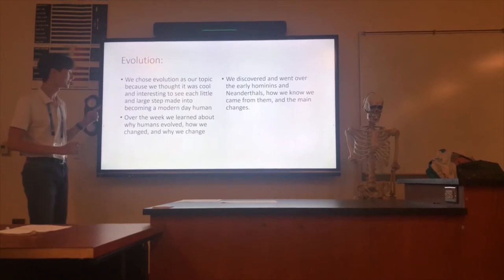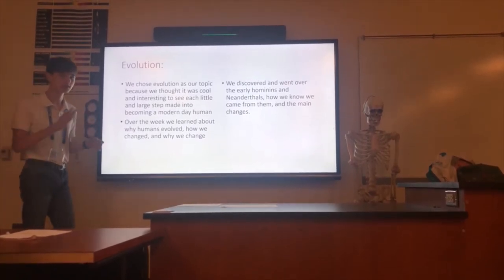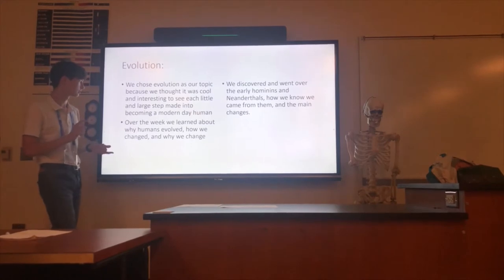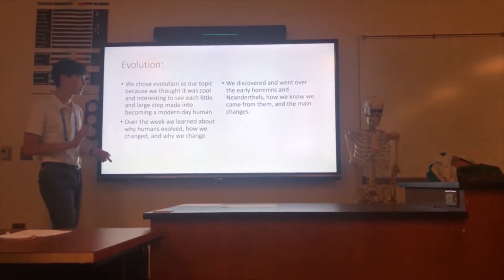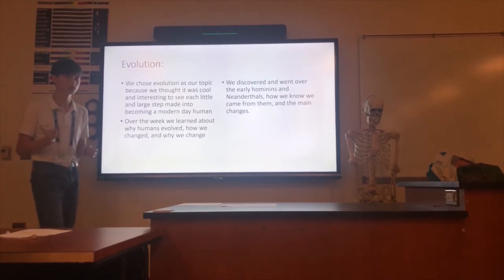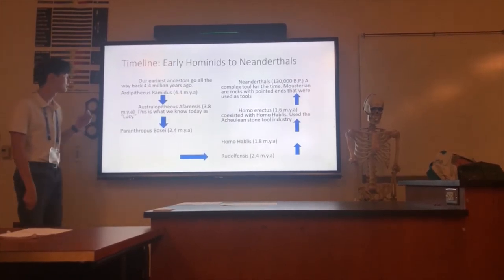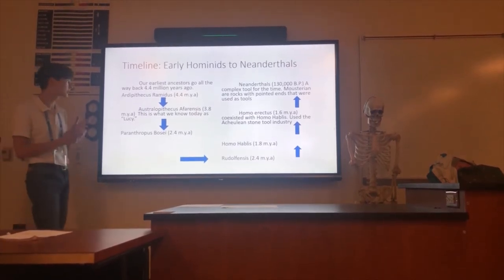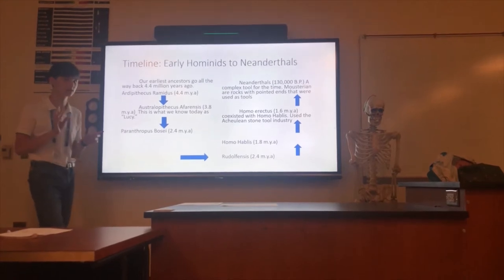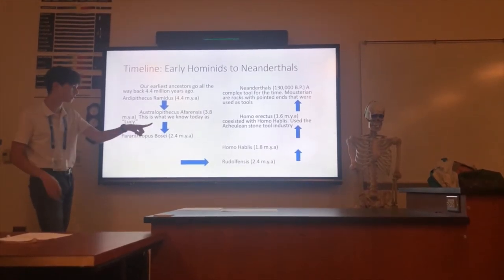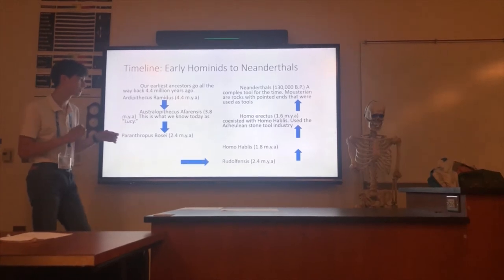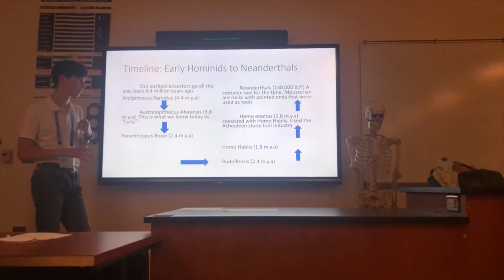We did evolution as our topic because we thought it was cool seeing each step of how we changed. This week we learned why and how we changed, going over early hominids to Neanderthals — how we know we came from them and the main changes of each one. Our earliest ancestors originated about 4.4 million years ago with Ardipithecus Ramidus, and then Australopithecus Afarensis, known as Lucy. A couple million years later came Homo erectus, which coexisted with Homo habilis, and we also started to see more modern stone tools.